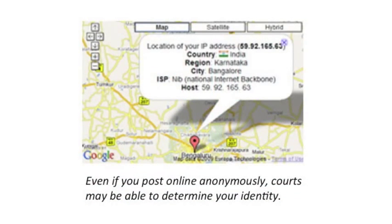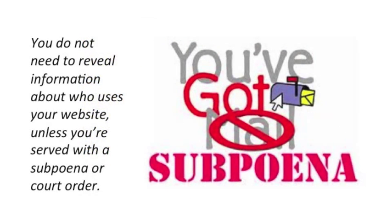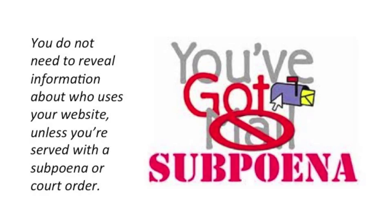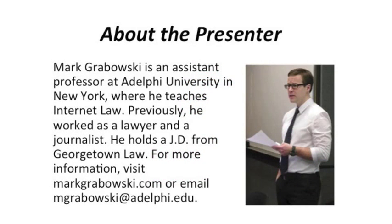Finally, if you make a defamatory comment online, don't assume you can hide behind anonymity. A court may compel a website to reveal which IP address the defamatory statement came from, and based on that cyberspace address, they may be able to determine your real-life identity. On the other hand, if you operate a website and the police or someone else wants to know who posted comments on your site, you don't need to reveal anything unless they get a court order or a subpoena. Hopefully now you feel a little more confident in being able to recognize and safely navigate some of the most common defamation traps on the internet. This has been Professor Hrabowski.